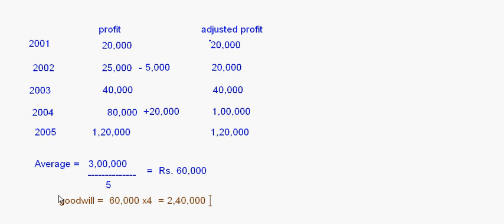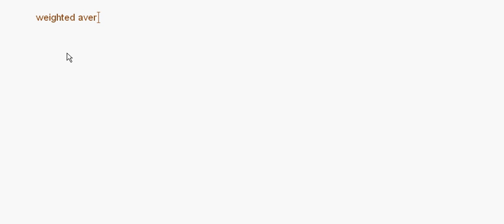If no abnormal profits or losses are given, no adjustments are needed — just use the profit as-is. If a loss is given for any year, it will be subtracted. Now let's take up the weighted average method. In weighted average, you are given weights for each year's profit, and any abnormal losses or gains still need to be adjusted.